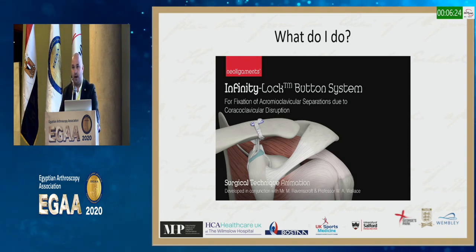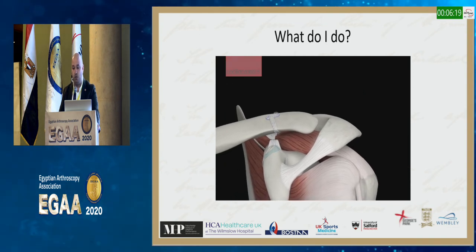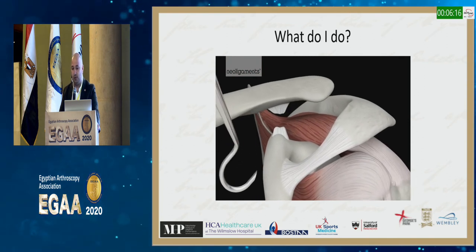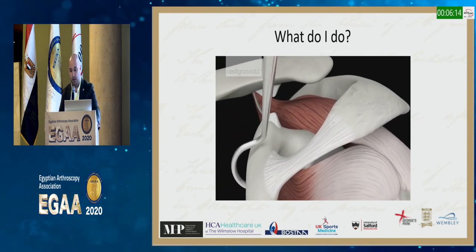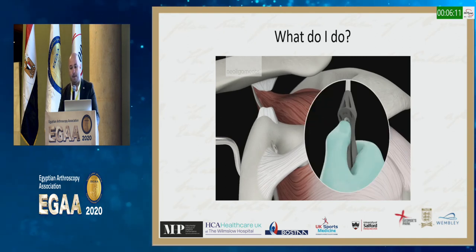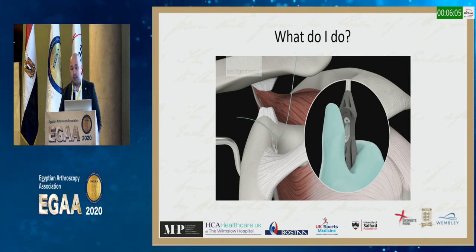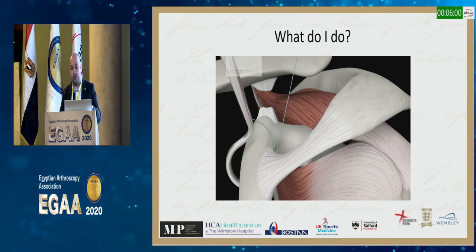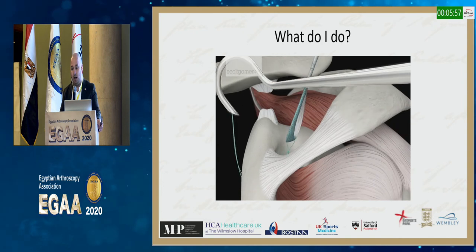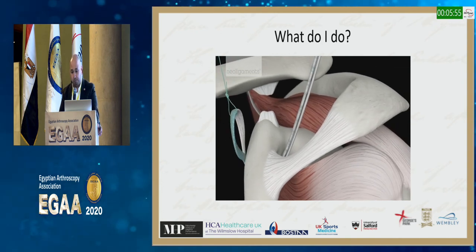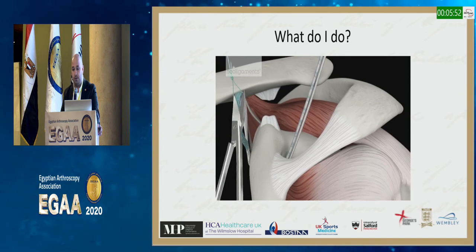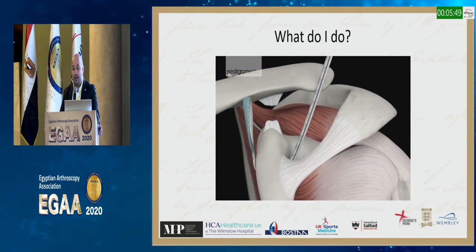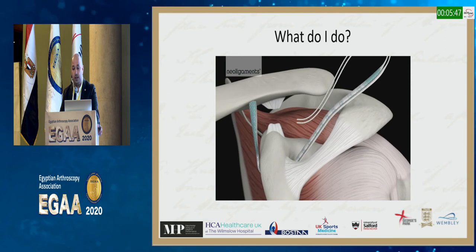What I do now is the Infinity Lock — a type of synthetic graft, different from SurgiLig and FiberTape in that it's a woven rather than braided polyester, allowing both in-growth and on-growth. We use a hook to pass a wire around the base of the coracoid, then pass an Ethibond suture through the loop, which is attached to a lark's foot patterning of this synthetic ligament. We then pass the two arms of the ligament through the loop, looping it around the base of the coracoid.